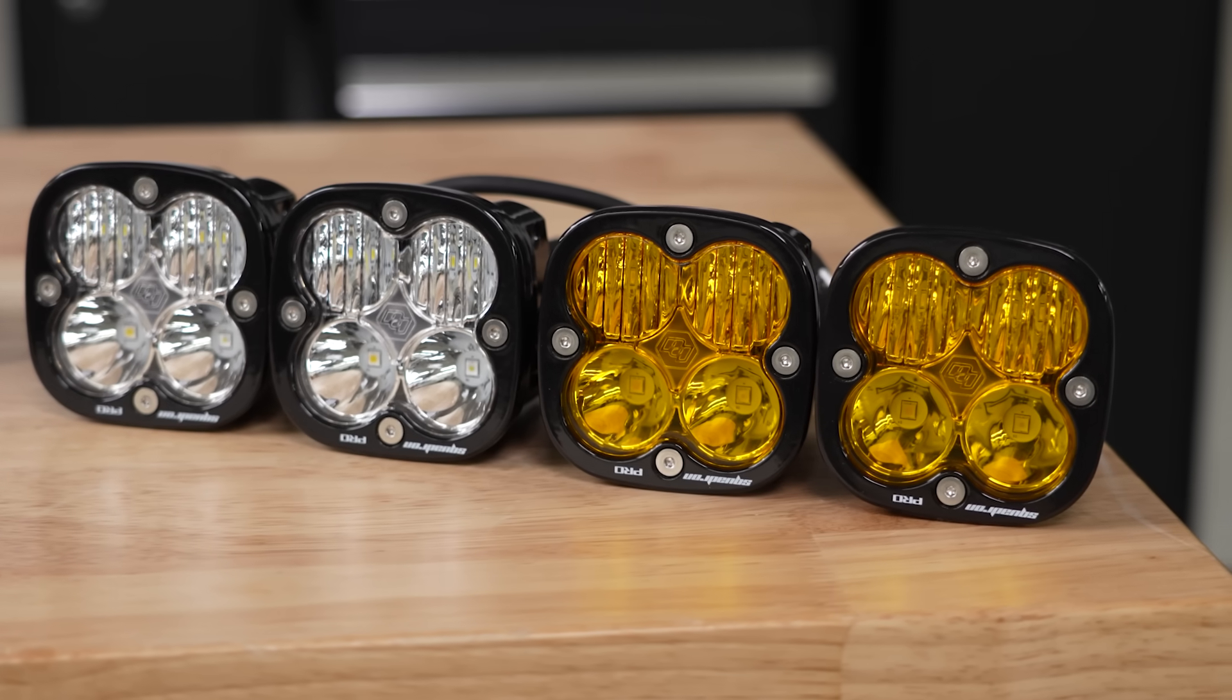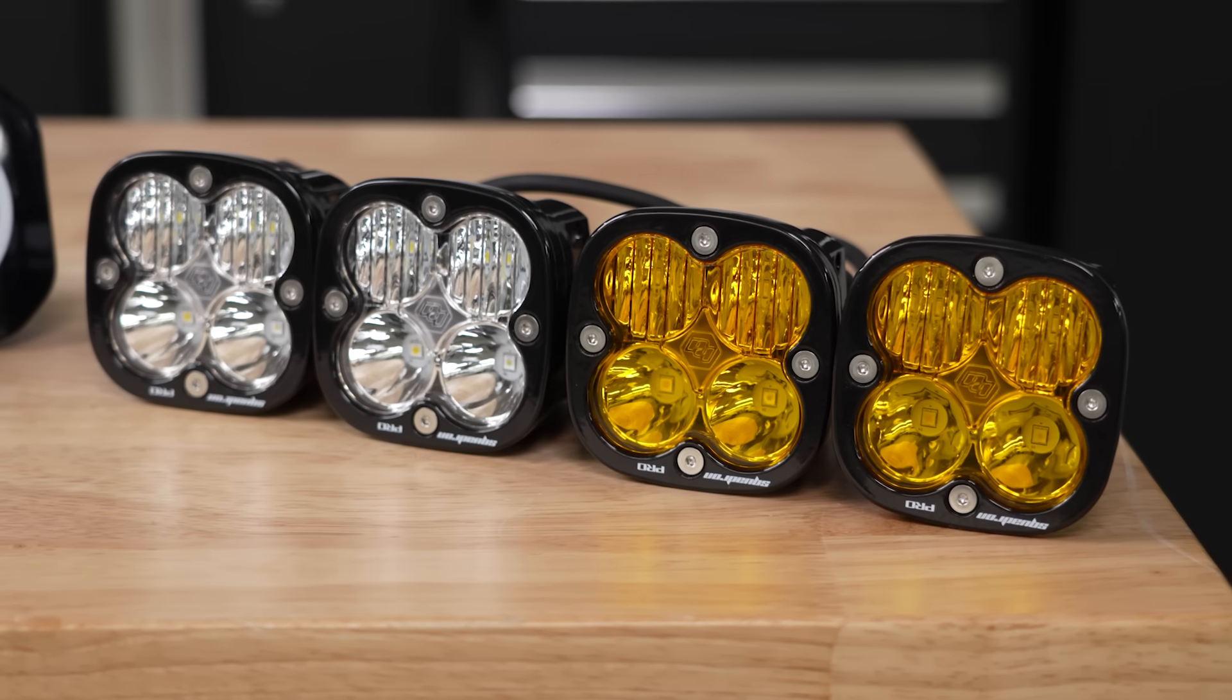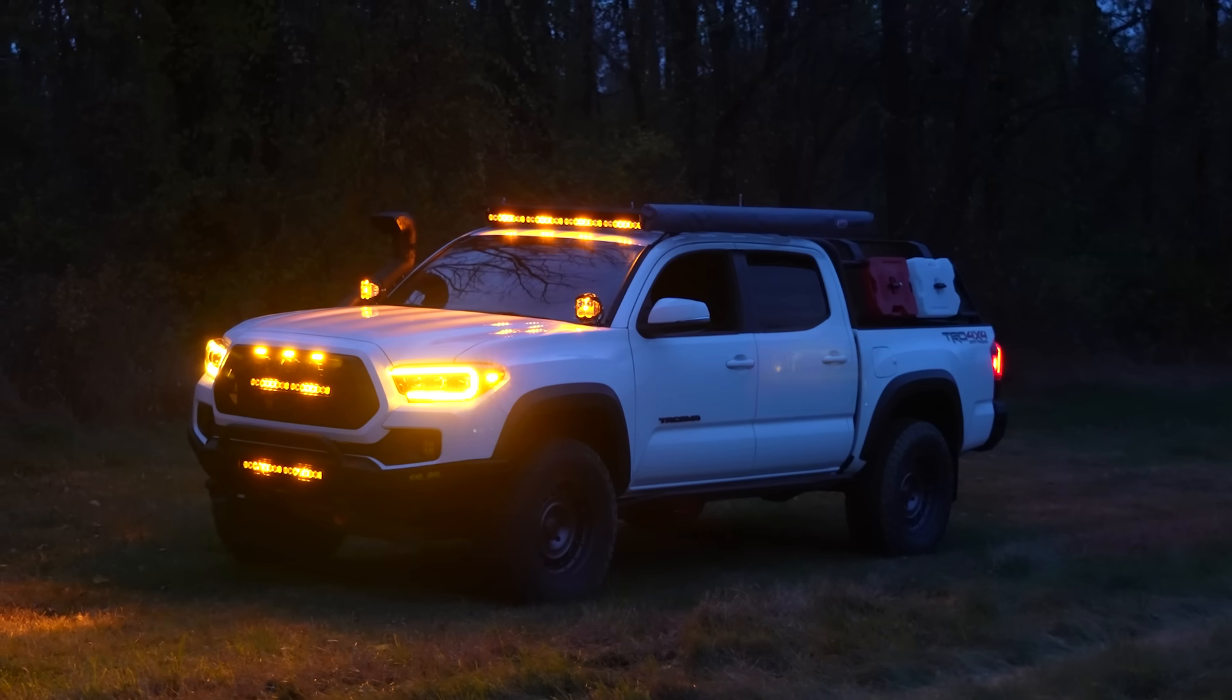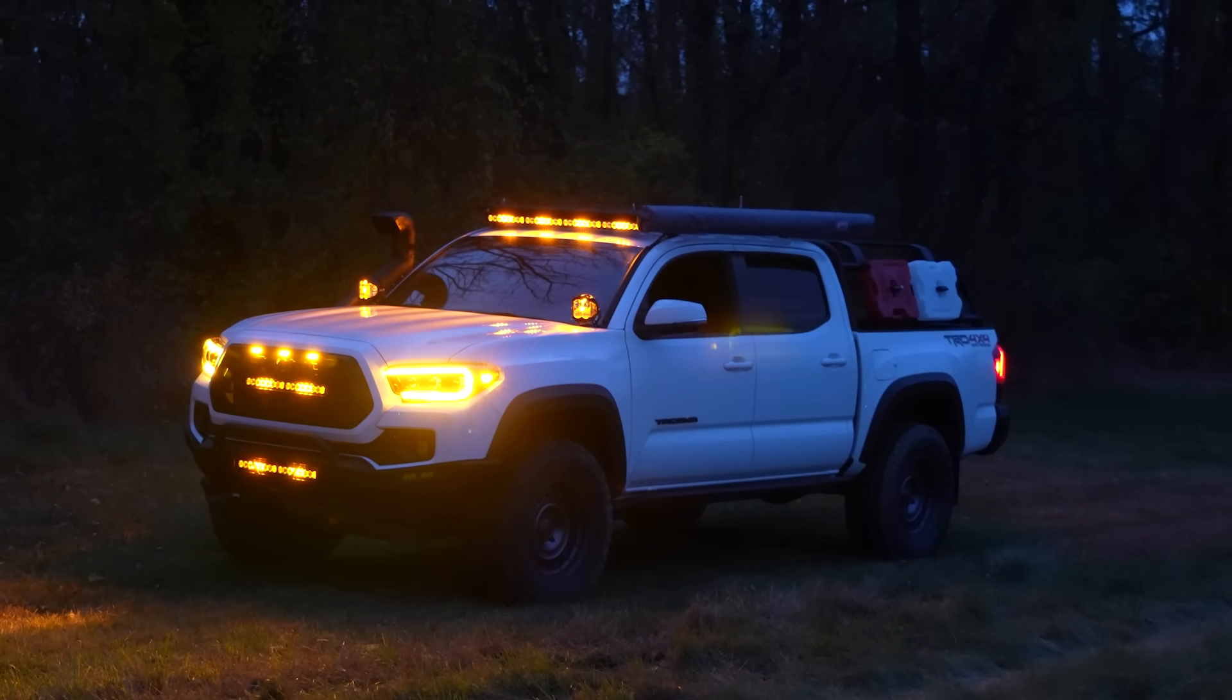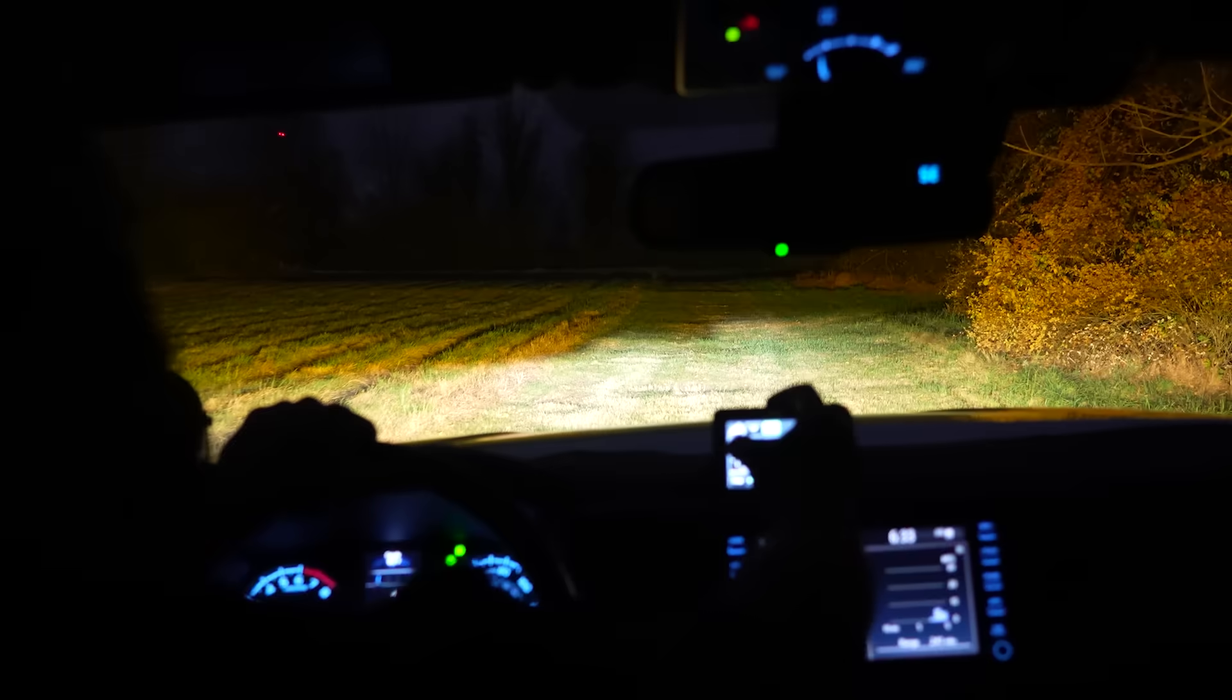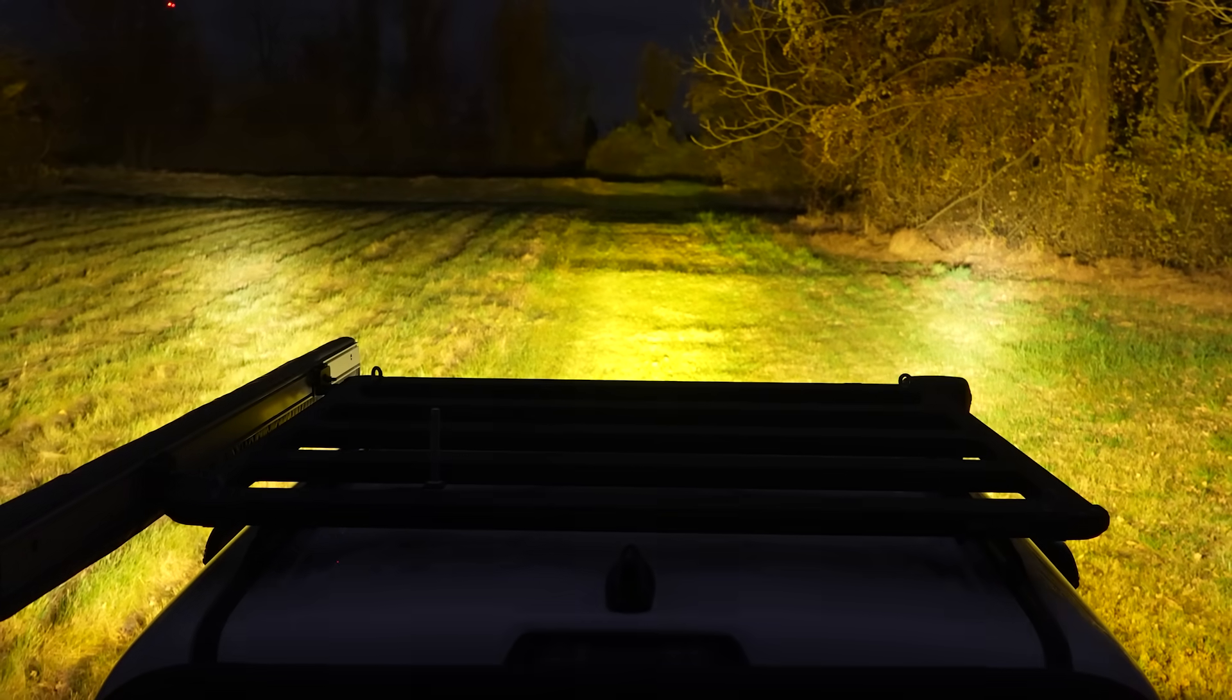That's why selective yellow or amber light works better in those conditions. It produces less glare and cuts through the particles more effectively. But what's actually happening is even cooler: your eyes are doing less work. When you reduce the amount of blue light entering your eyes, your brain can process the scene with less effort. It's not that the light isn't reflecting, it's that your eyes are better at cutting through the junk.